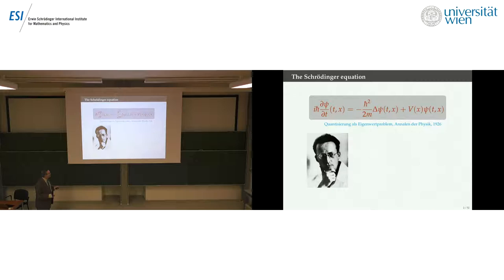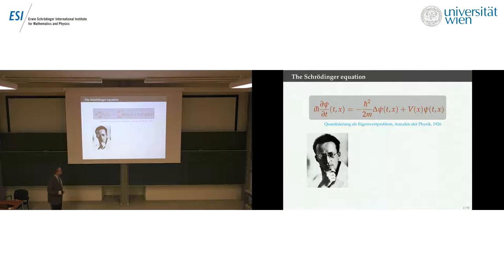This was published in a series of four papers — 'Quantisierung als Eigenwertproblem' — in Annalen der Physik, a four-part paper published in what was really the Annus Mirabilis for Schrödinger. It was an amazing year, 1926, and this is more or less what he got the Nobel Prize for seven years later.